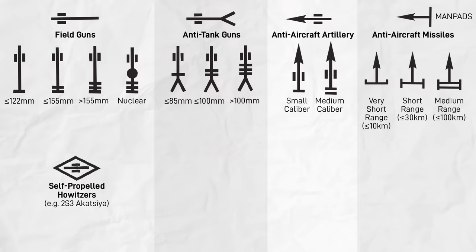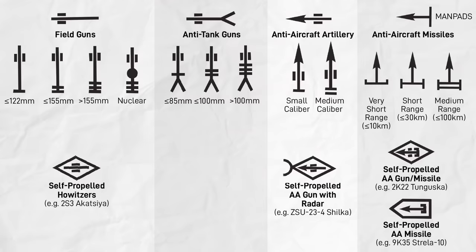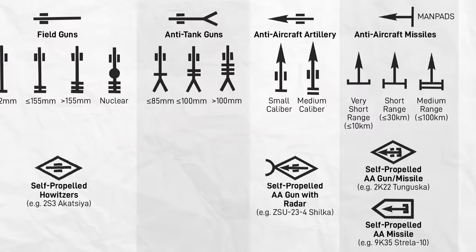To put it together, if you combine a field gun with a diamond, you have an SPG like an Akatsia. Anti-aircraft missile plus an APC would be something like a Strela 10 and so on. When a half circle is added to the front of a vehicle, like a SAM, it means it has an integral radar.